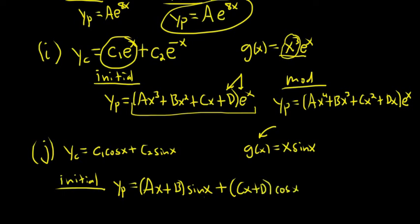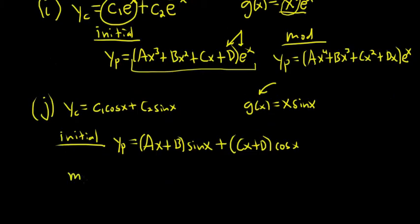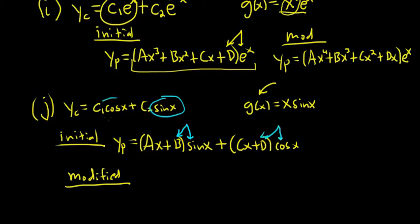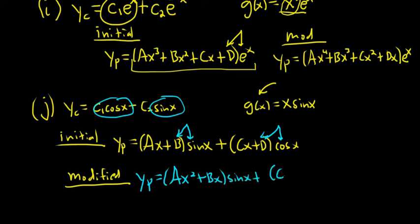Now for the modified, we look at the terms of Yc and our Yp. You might say there's no repetition — but yes, there is: b sine x repeats with sine x, and d cosine x repeats with cosine x. So we have to multiply the whole thing by x. So Yp would be ax squared plus bx, times sine x, plus cx squared plus dx, times cosine x. That's our modified.